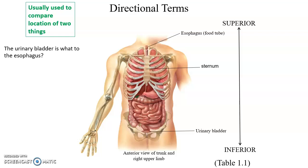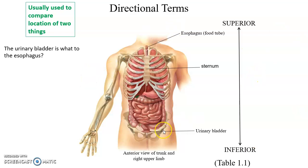There are certain terms that we use in anatomy. The first set of terms is superior and inferior. Superior means closer to the top of the head; inferior means closer to the bottom of the feet. For instance, here we have the urinary bladder and the esophagus. The urinary bladder is inferior to the esophagus.